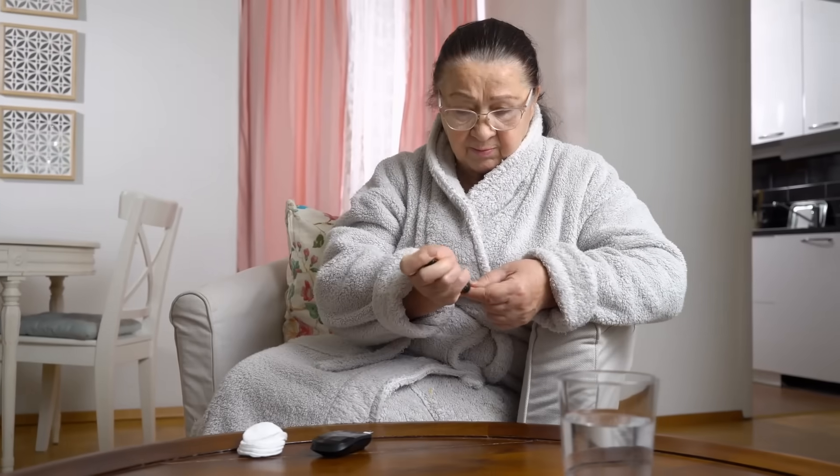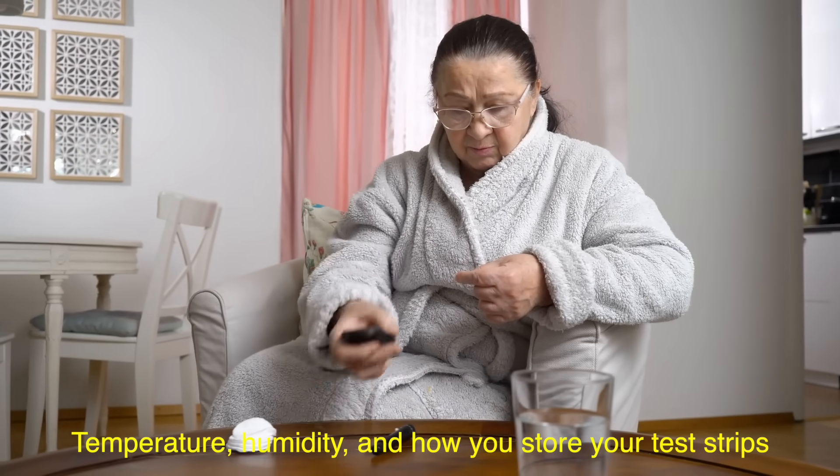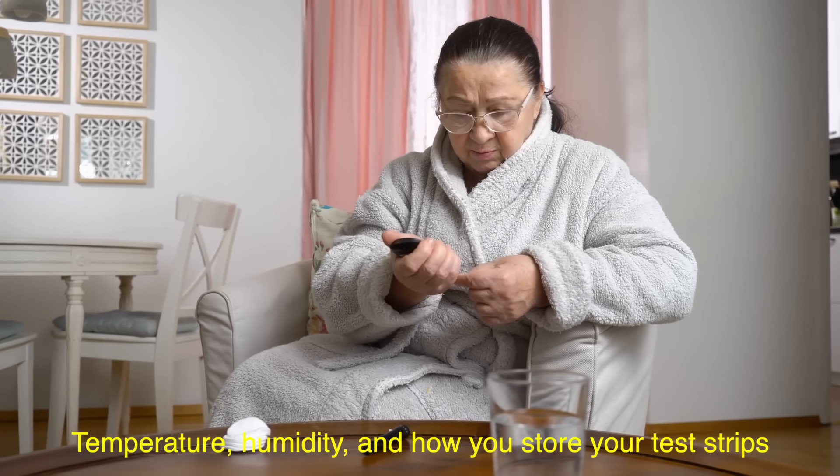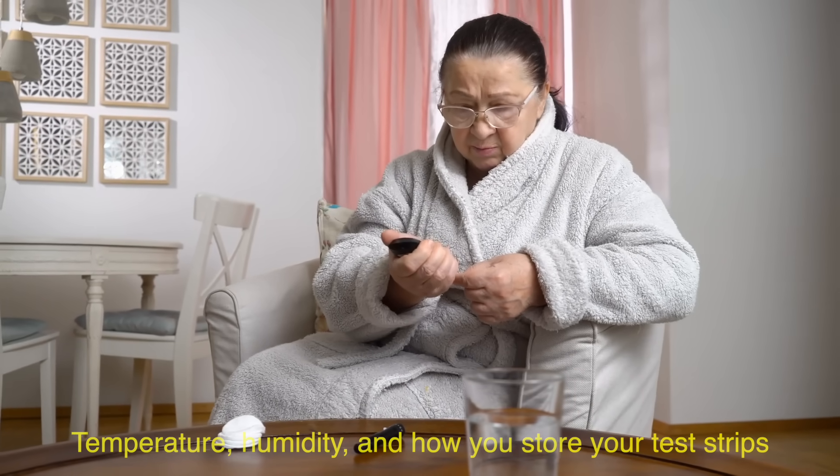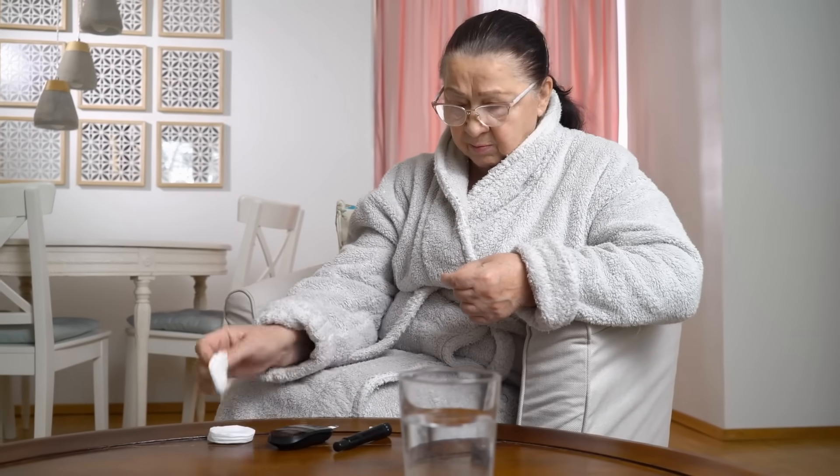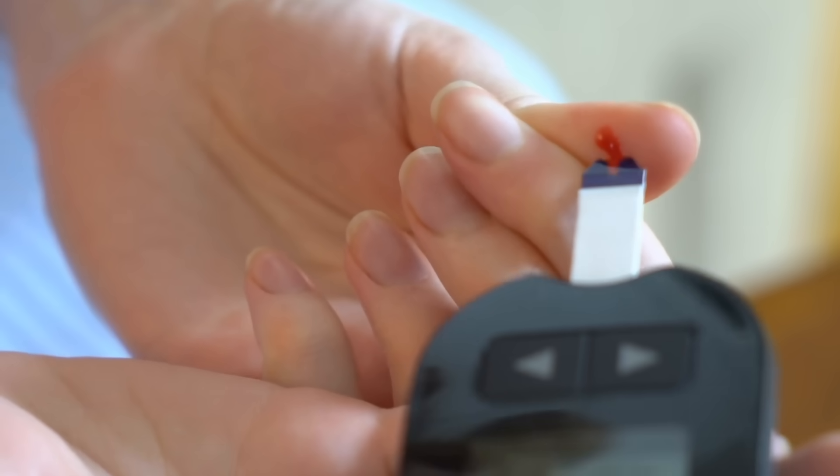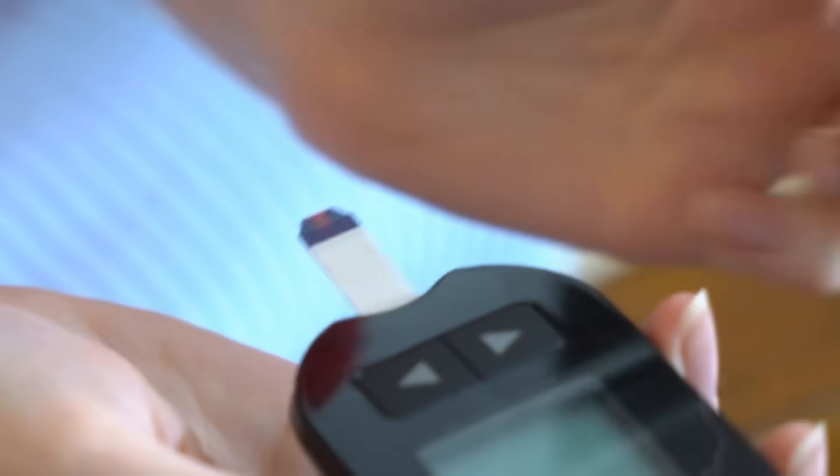However, no device is perfect. Factors like temperature, humidity, and even how you store your test strips can affect accuracy. That's why most manufacturers recommend using fresh strips and storing them in a cool, dry place. Regularly comparing your glucose meter readings with lab results can also help ensure consistency.